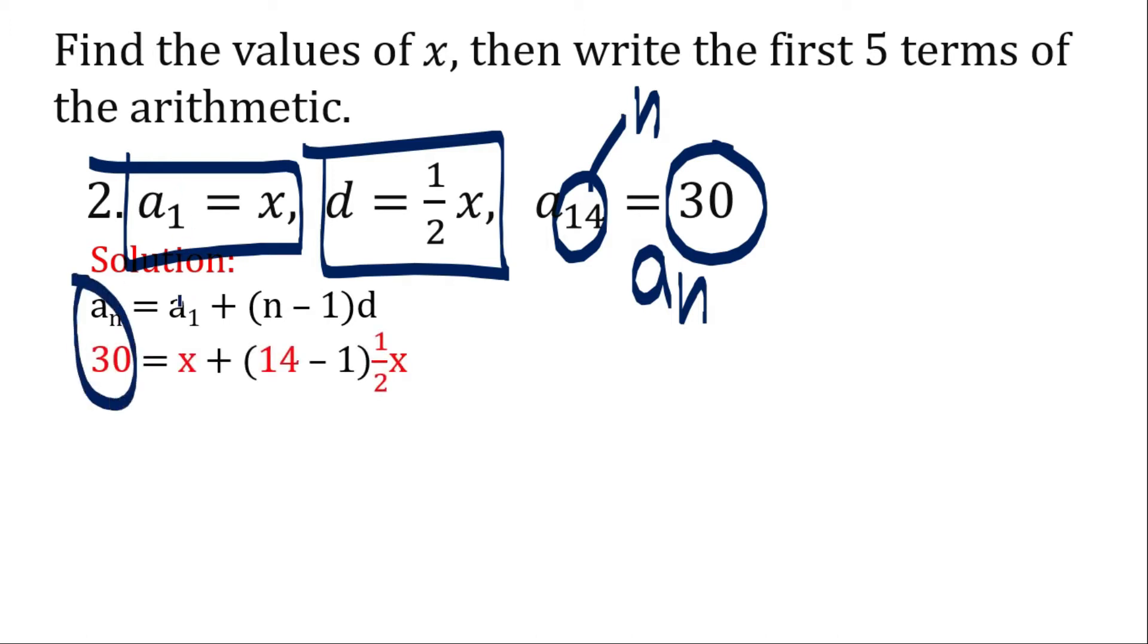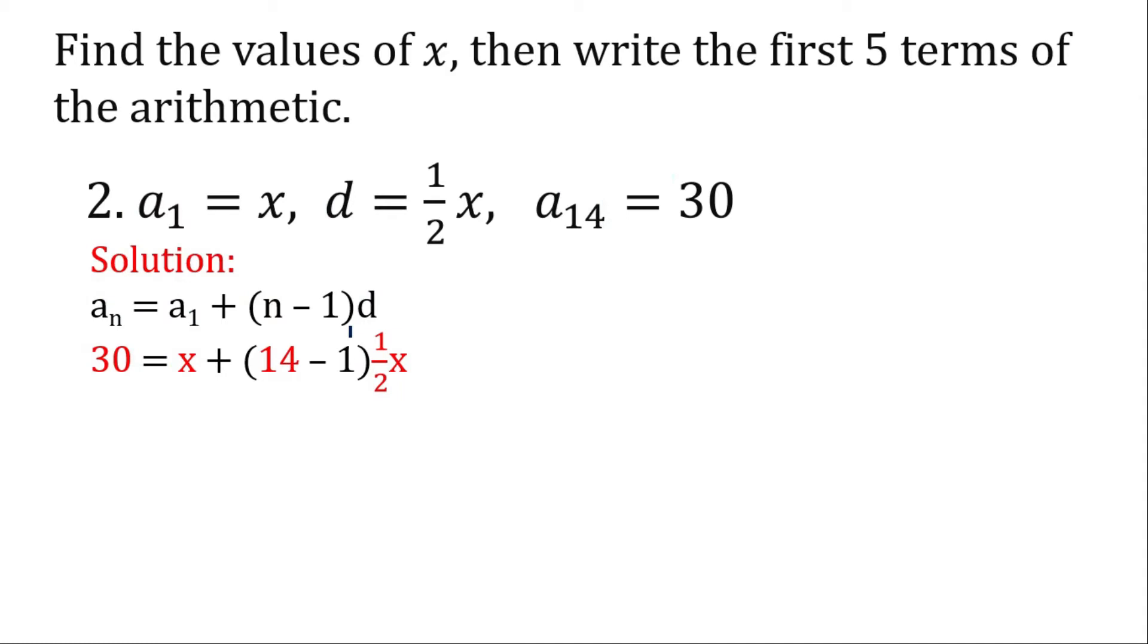Our a sub n is 30, our a sub 1 is x, our common difference is 1 half x, and our n is 14. Now let's subtract 1 from 14 first. We have 13 times 1 half x. Now let's multiply 13 by 1 half x, all we have to do is multiply it to the numerator. 13 times 1 is 13 over 2x.